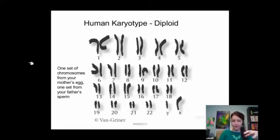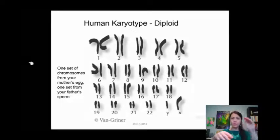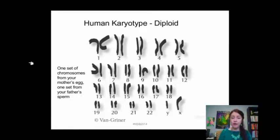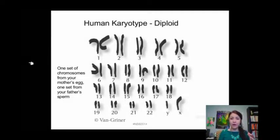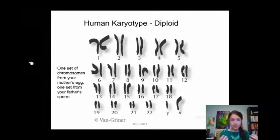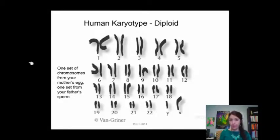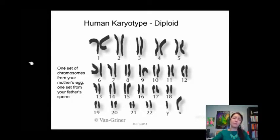Chromosomes are numbered three through 22, going from biggest down to the smallest set. Then we get to set 23, which are your sex chromosomes — XX if you're female, and XY if you're male. One of those X's came from your mother, because she has two X's, and that Y came from your father if you're a boy. If you are a girl, the other X came from your father. It's very interesting to see the roadmap of your chromosomes.